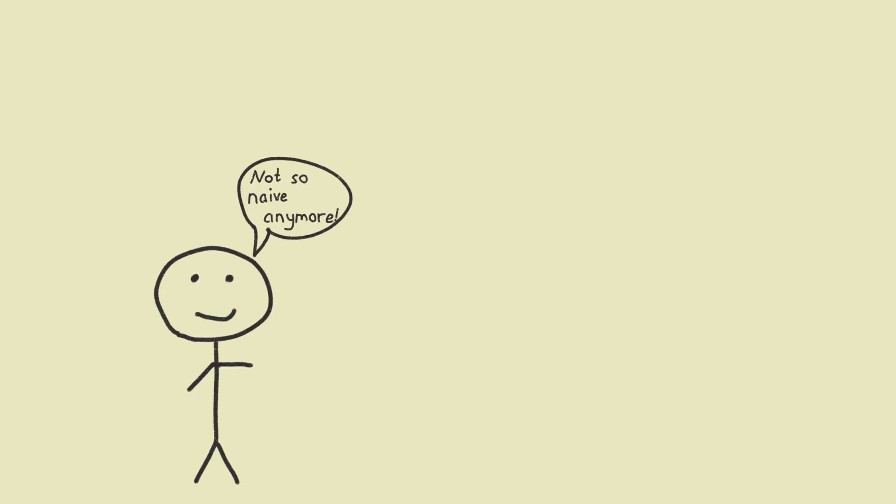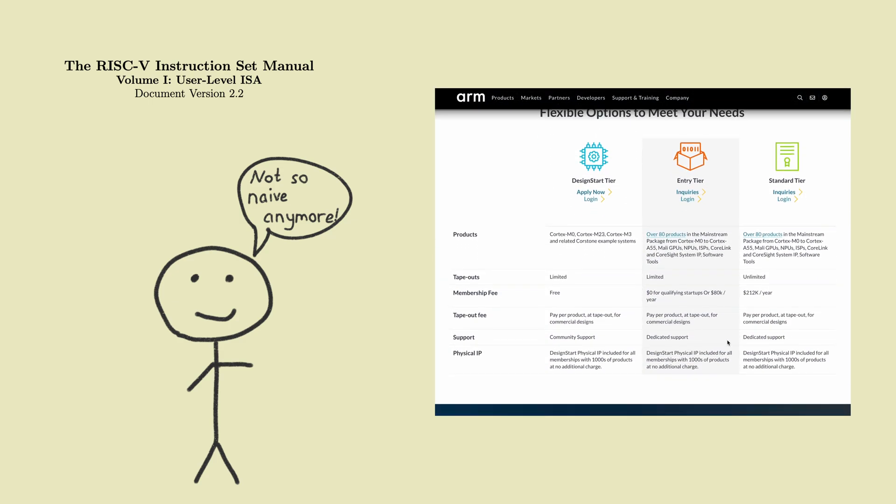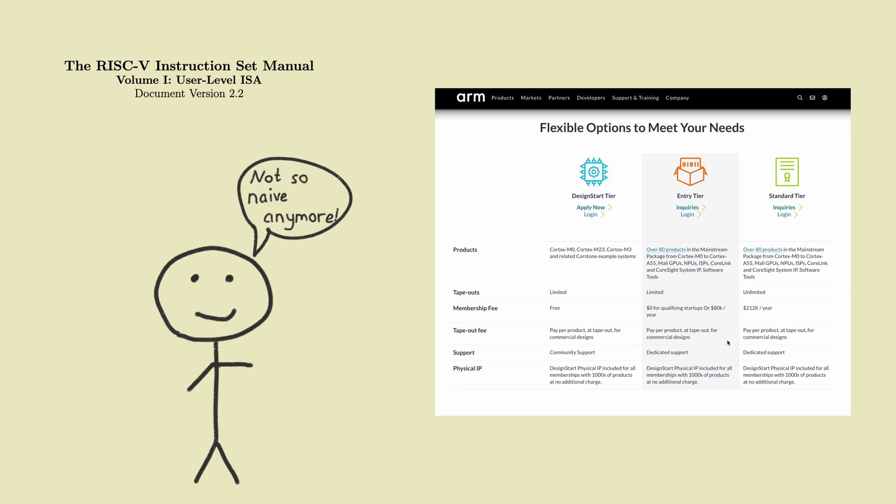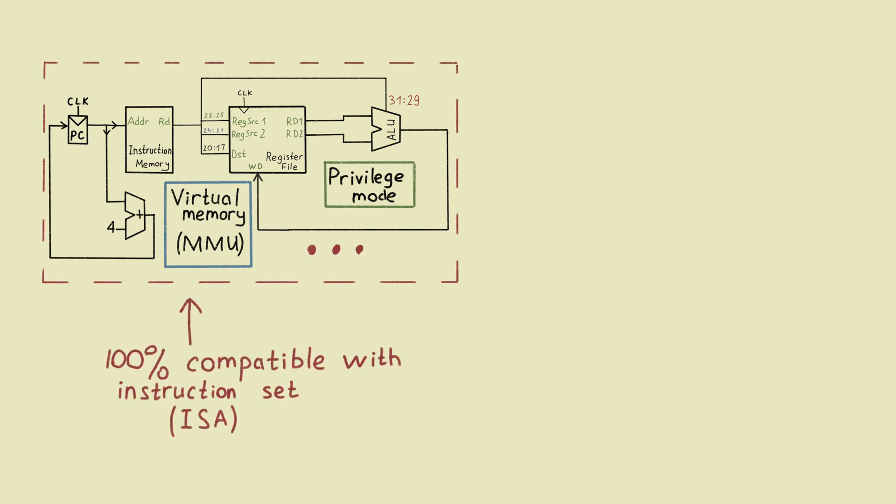If we are more pragmatic, we can design a CPU circuit implementing RISC-V instruction set. Or we can pay some license money and implement ARM instruction set. In both cases, we will have a lot of software ready to go in open source. Again, all the privilege mode logic, virtual memory translation logic and whatever else mentioned in the instruction set should be implemented in our CPU circuit.